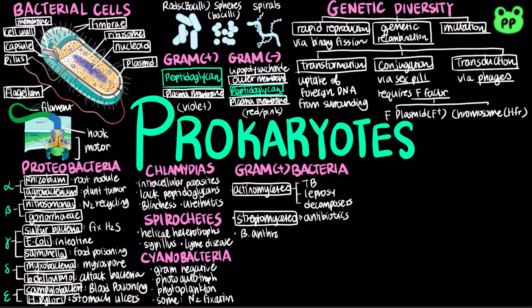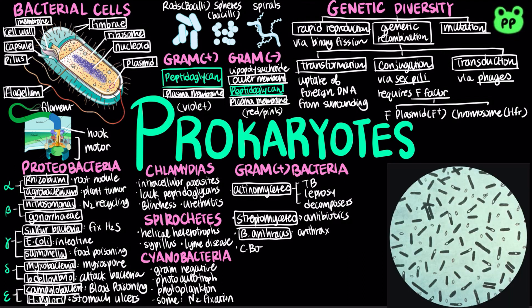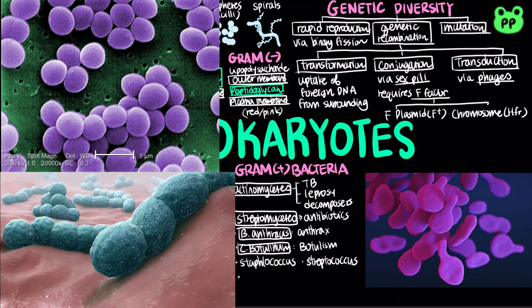Gram-positive bacteria also include Bacillus anthracis, which causes anthrax; Clostridium botulinum, which causes botulism; Staphylococcus; Streptococcus; and mycoplasmas, which are the tiniest known cells, with diameters as small as 0.1 micrometers. They are also the only bacteria known to lack cell walls.